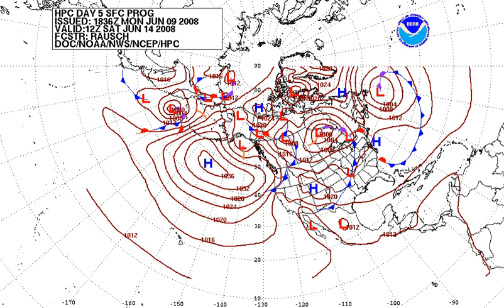In most circumstances, atmospheric pressure is closely approximated by the hydrostatic pressure caused by the weight of air above the measurement point. As elevation increases, there is less overlying atmospheric mass, so that atmospheric pressure decreases with increasing elevation.